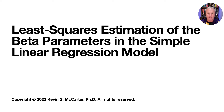Welcome back. In this lecture, the least squares criterion will be used to find estimators of the beta parameters in the simple linear regression model. We will see that the least squares criterion leads to what are called the normal equations, and that the least squares estimators of the beta parameters are values in the parameter space that satisfy these normal equations.